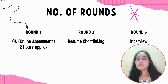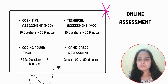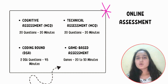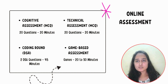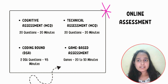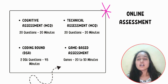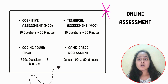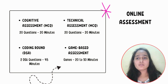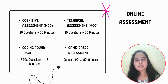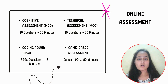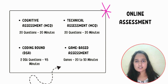The OA will be approximately two hours long and will have four sections: cognitive assessment, technical assessment, coding round, and game-based assessment — all within two hours. You cannot switch between sections; once a section's time is over, you are automatically redirected to the next section.